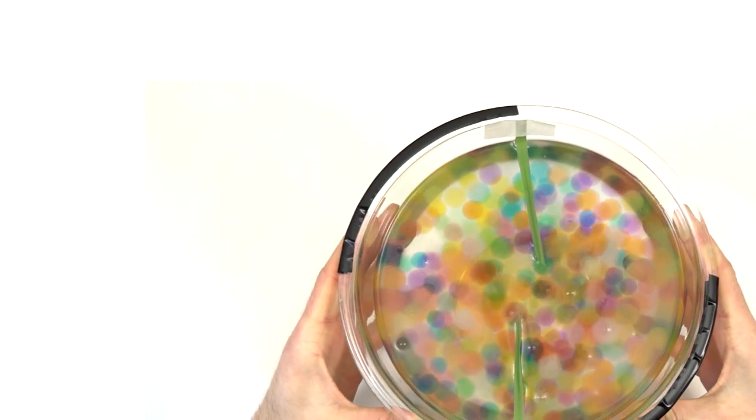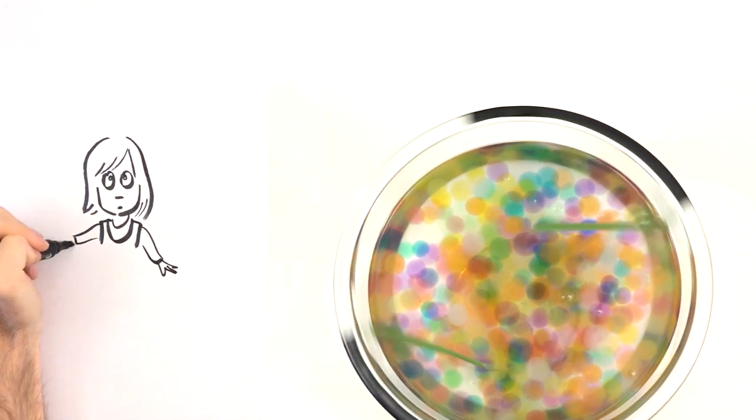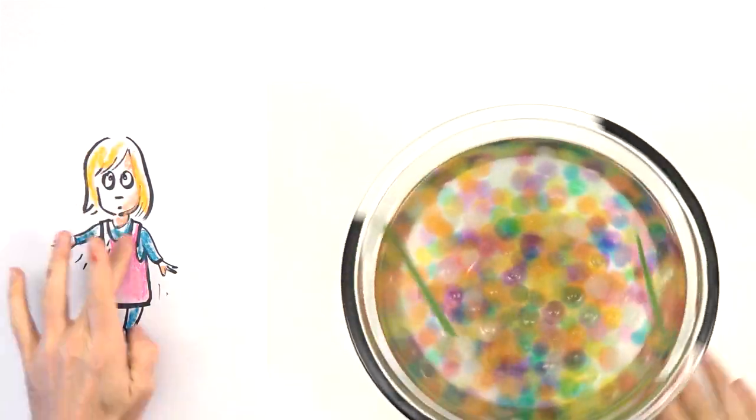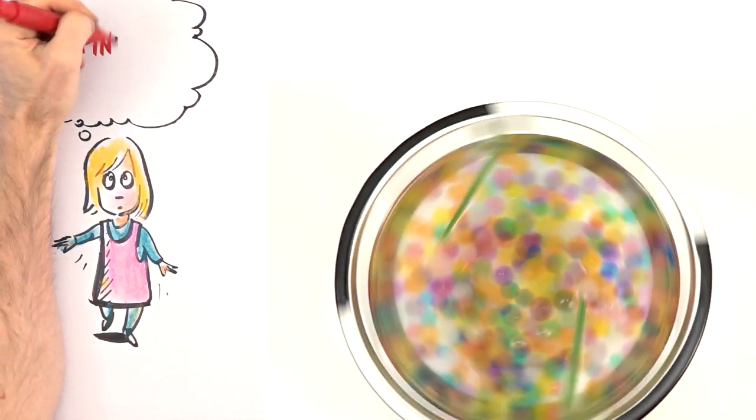So when you start to spin around, your ear tubes are moving with you, but the fluid inside them isn't yet, and the tiny sensory hairs get pulled backward. Your brain knows that this means that you've started moving.